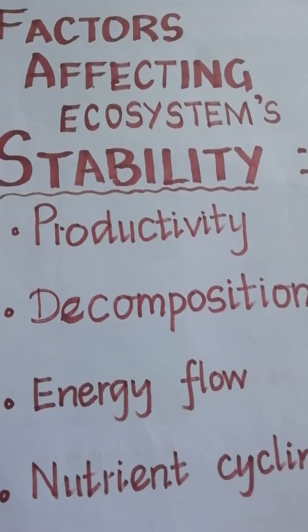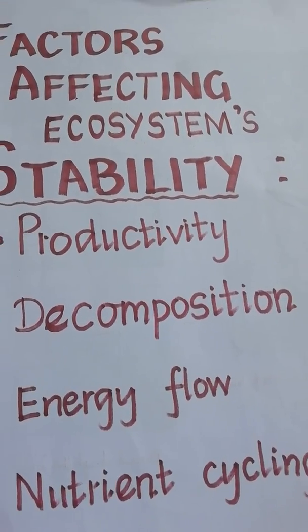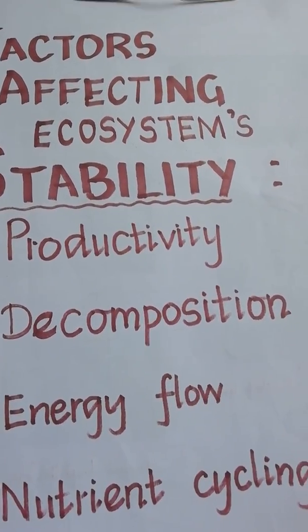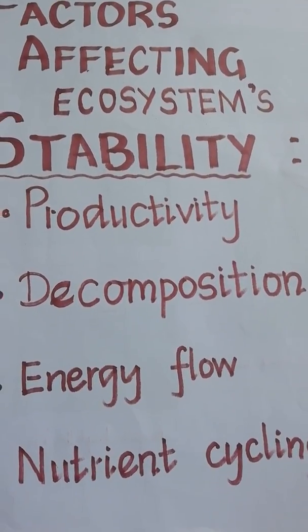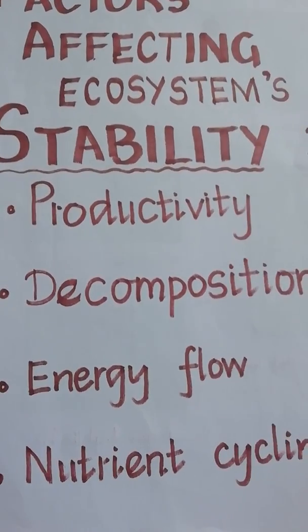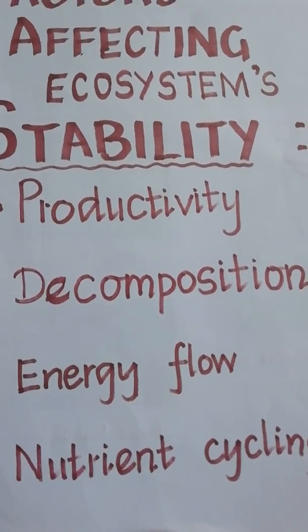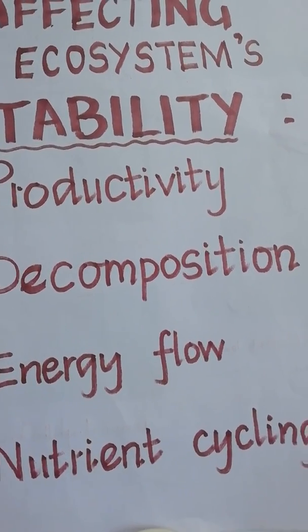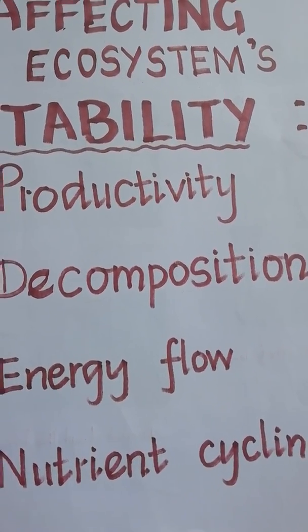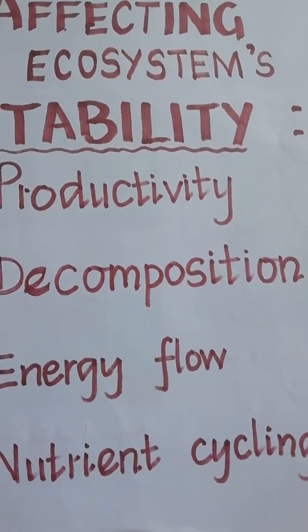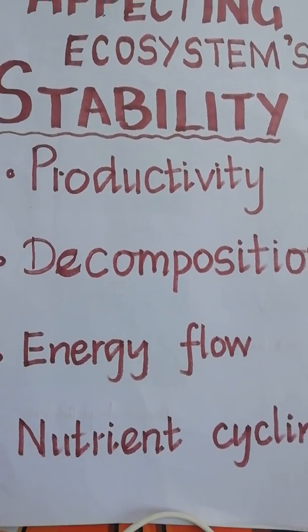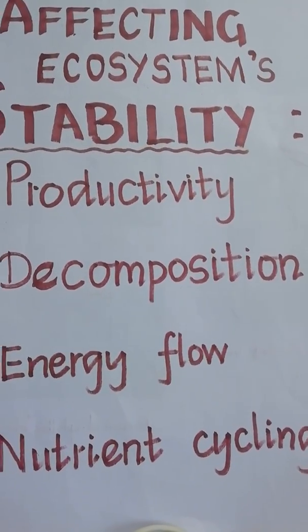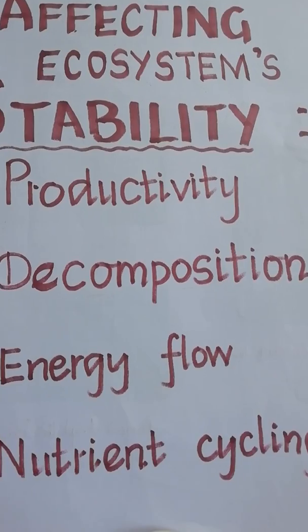There are four major factors which affect the stability of ecosystem. They are productivity, decomposition, energy flow and nutrient cycling. We are going to learn about each and every factor in detail.